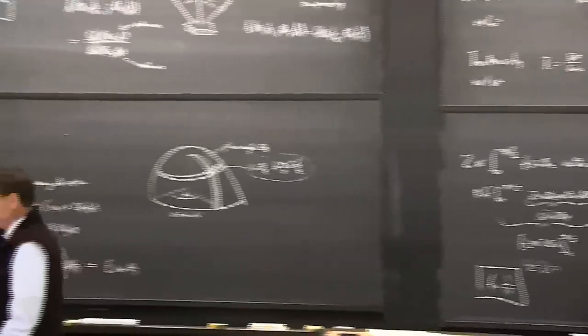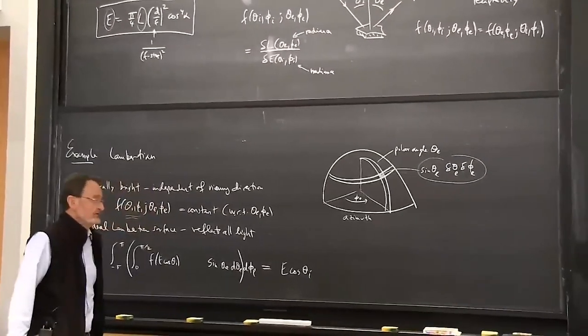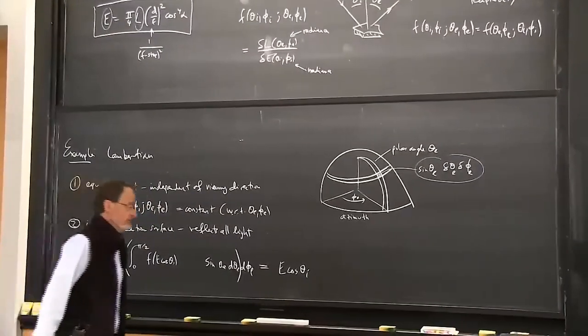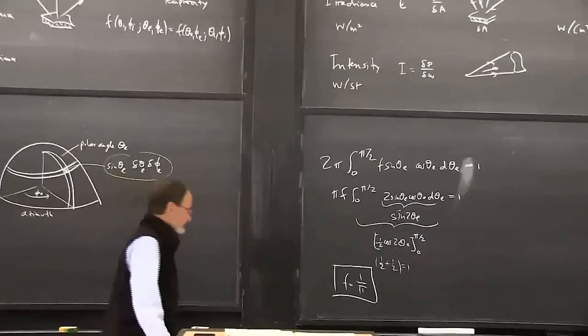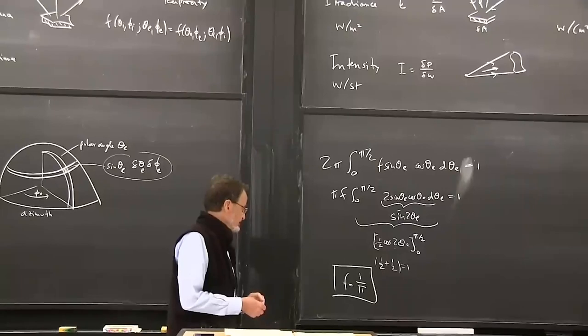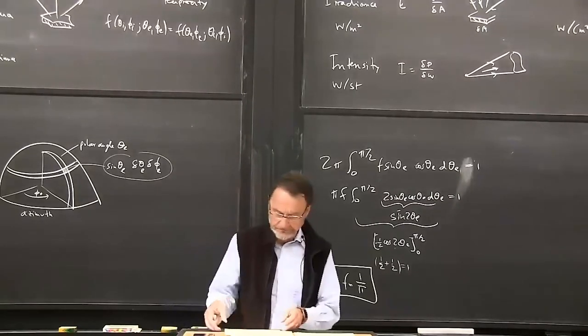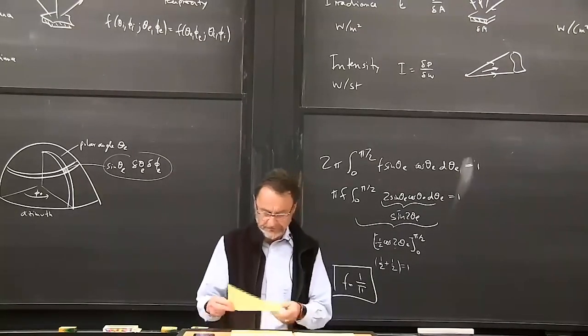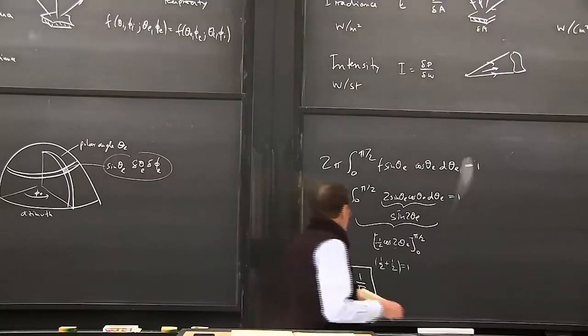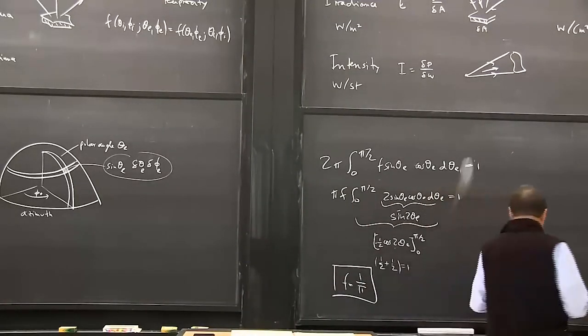So that's it for the Lambertian surface—that's the BRDF for a Lambertian surface, and that's as easy as it can get. There's some question about why it's 1/π and not 1/2π. Let's think about that. If you think about the hemisphere of possible directions, here's our surface element radiating into all these directions. The solid angle occupied by that hemisphere is 2π.